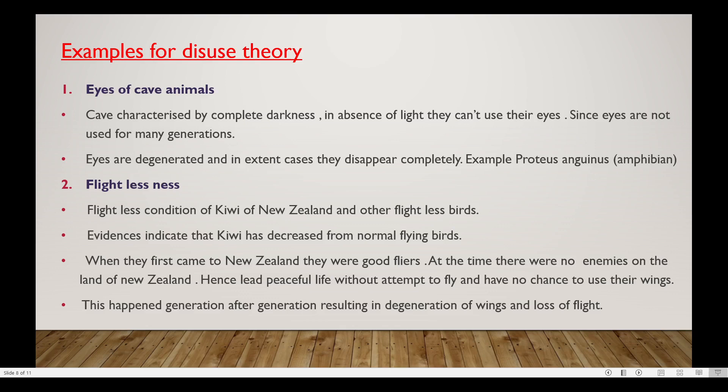When kiwis first came to New Zealand, they were good flyers. At that time, there were no enemies on the land of New Zealand. Hence, they led a peaceful life without any attempt to fly and had no chance to use their wings.